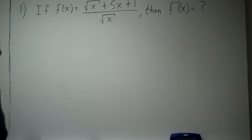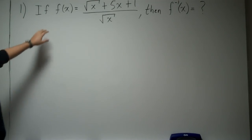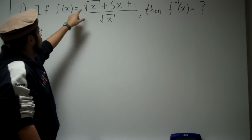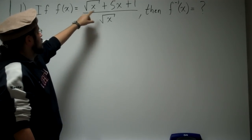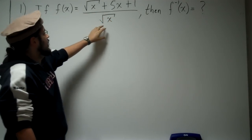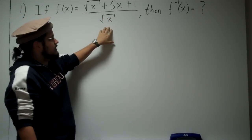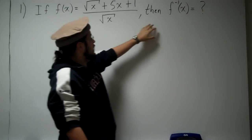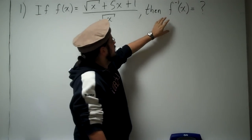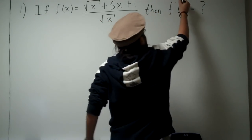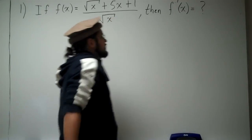Alright, so this is the first problem. We have a function given here: f of x equals the square root of x plus 5x plus 1, all that divided by the square root of x. They're asking us to find f prime of x.